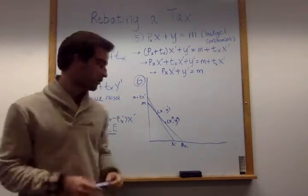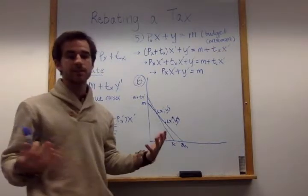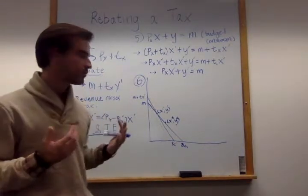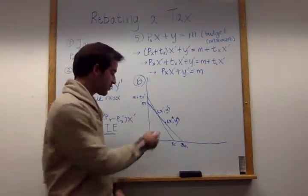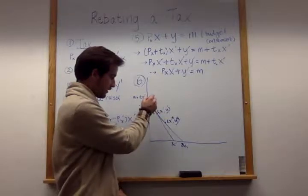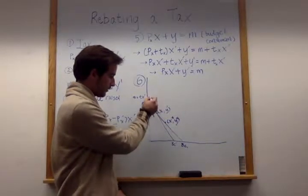Now once the rebate's issued, the government increases M for the consumers. Their income gets bigger or larger. So we show a shift in income to be the shift to this new budget curve right here.